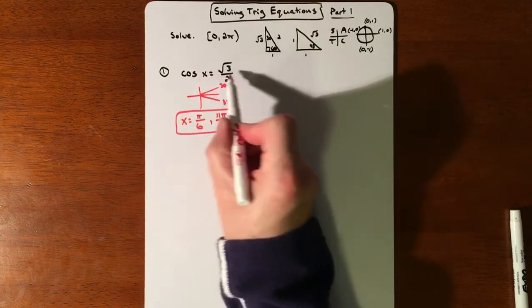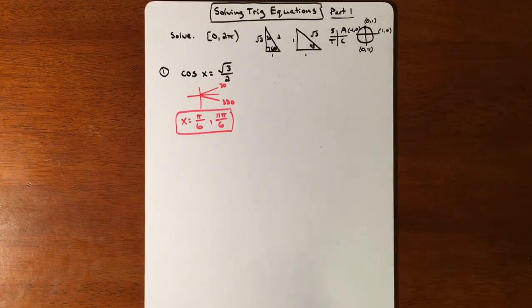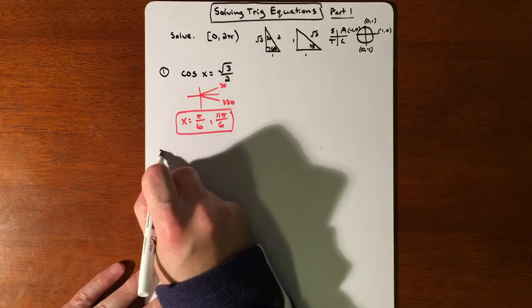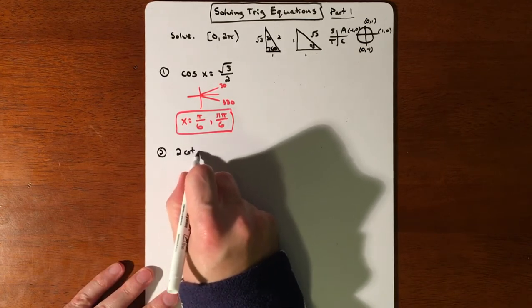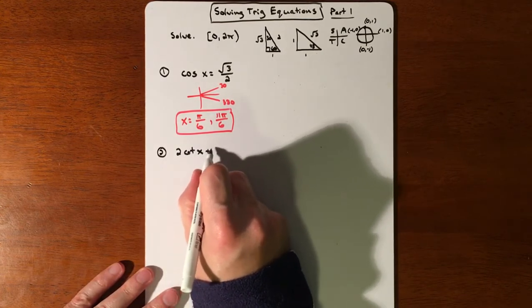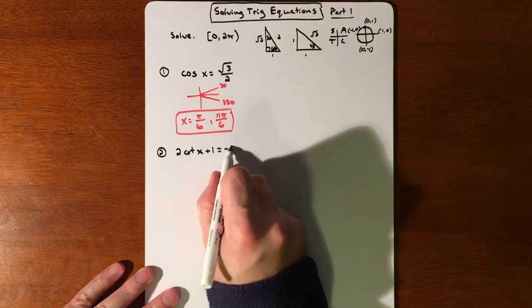For example, let's say you have 2 cotangent x plus 1 equals negative 1.